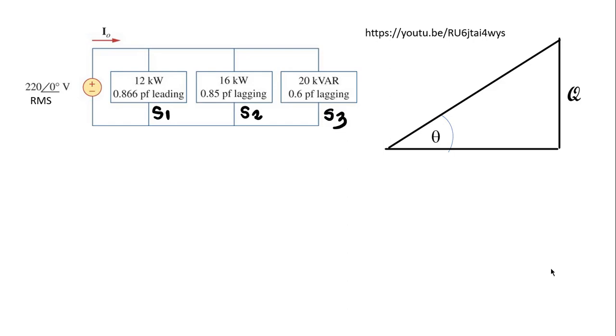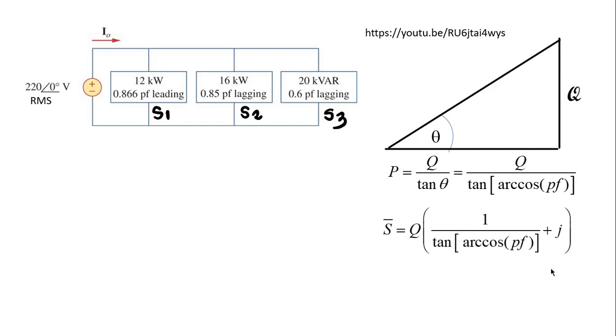In the power triangle we see that Q, the reactive power, is the vertical side on the far right and theta is the power factor angle. The real part of this complex number, the complex power, what we call the active power, is Q divided by the tangent of the power factor angle. But the power factor angle theta is the arccosine of the power factor. So we can write the complex power as Q that multiplies this complex number. And that is what we will do to represent S3, the third load as a complex power in the calculator.